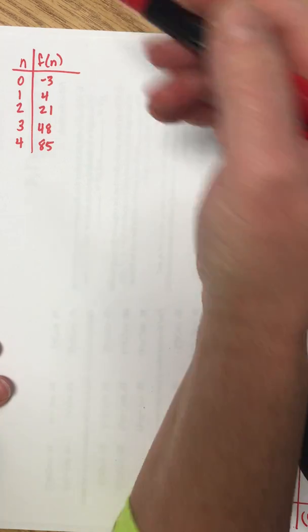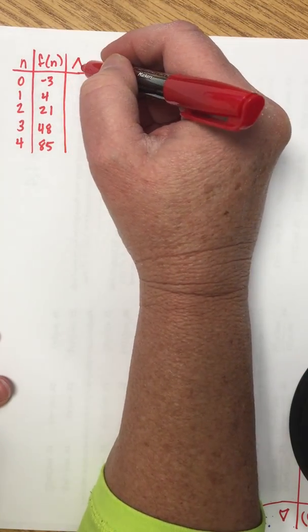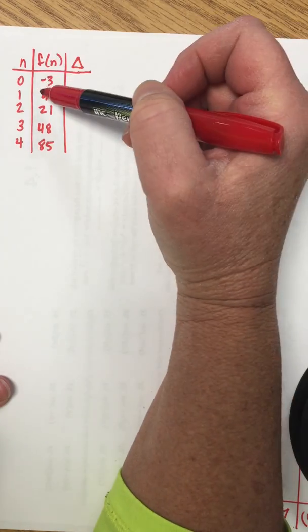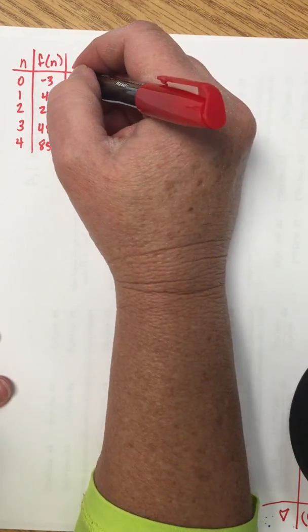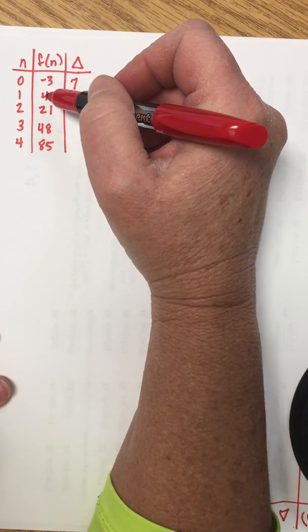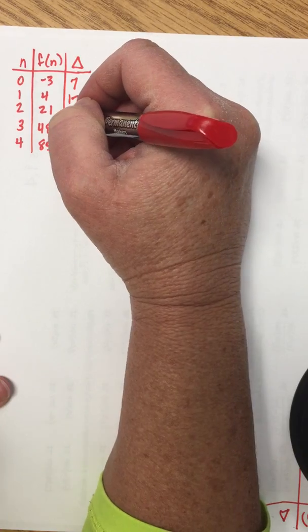To get more information about this table we're going to find the differences between the outputs. So 4 minus negative 3 is equal to 7, 21 minus 4 is 17, 48 minus 21 is 27, and 85 minus 48 is 37.